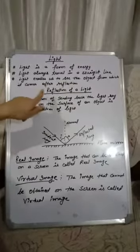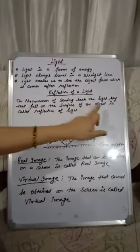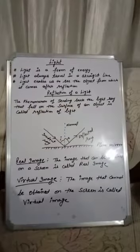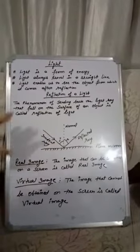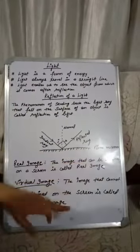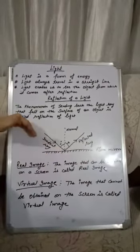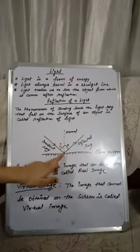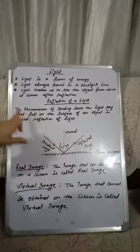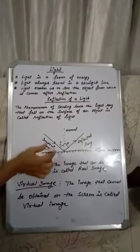Now let us understand the phenomena of reflection of light. The phenomena of sending back the light ray that falls on the surface of an object is called reflection of light. Let us understand this with a diagram. Suppose we have a plane mirror — when incident light falls on a plane mirror, the light is sent back.